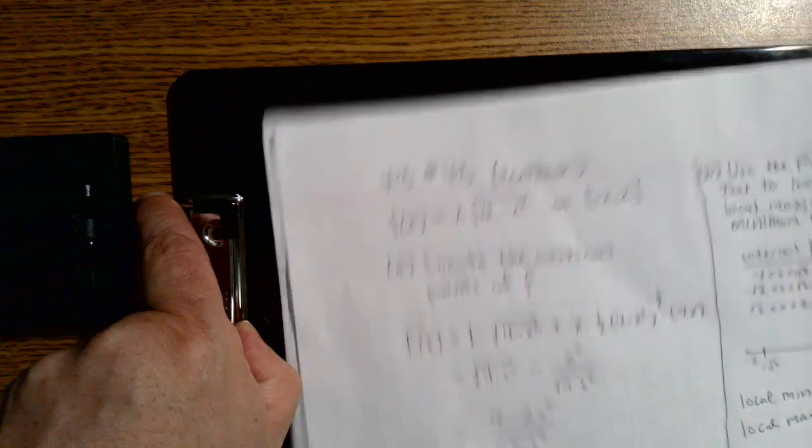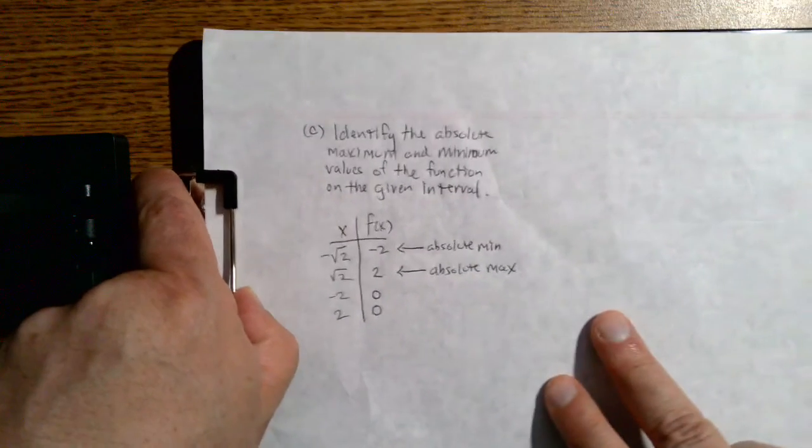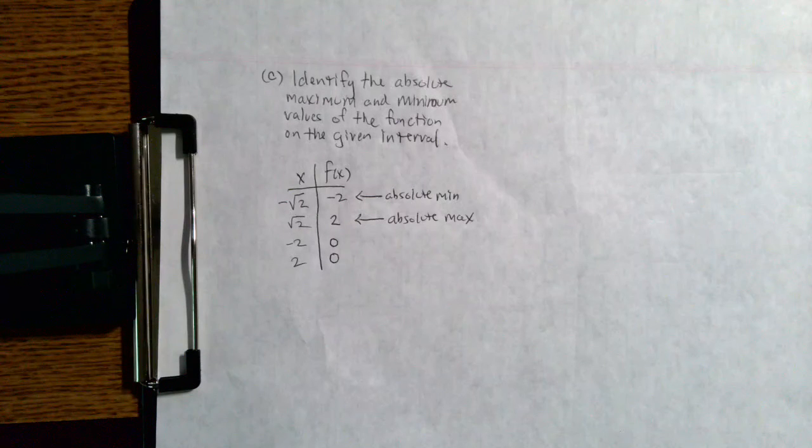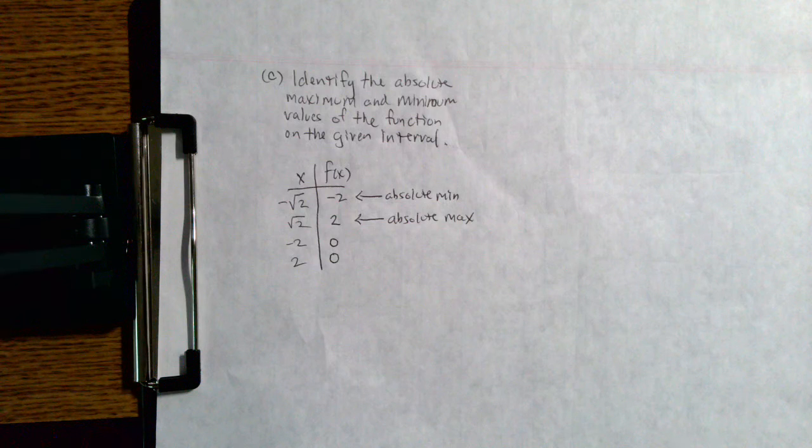So what's left to do is evaluate it at the endpoints, which I've done right here. We see that the original function evaluated at negative 2 and at positive 2 in both cases gives us 0.